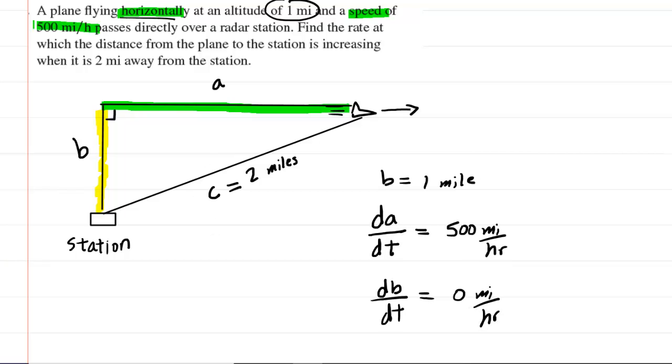We also know that the length of the hypotenuse of our right triangle is 2 miles. That is stated in the question that the airplane is 2 miles away from the station. So we have that as one of our knowns. And then finally,